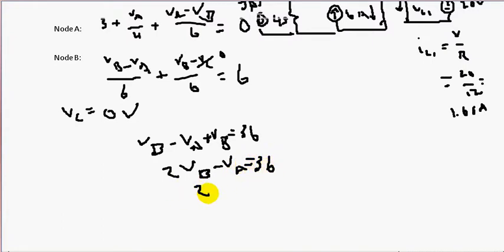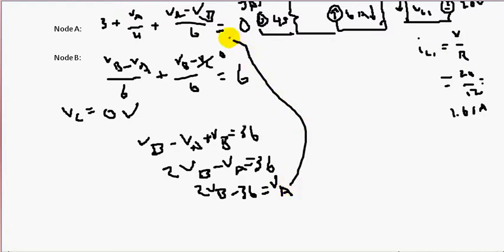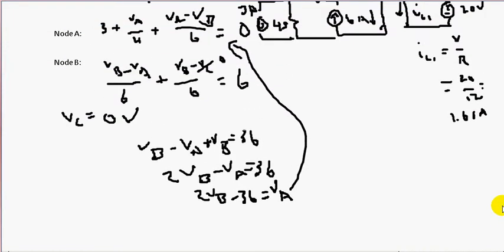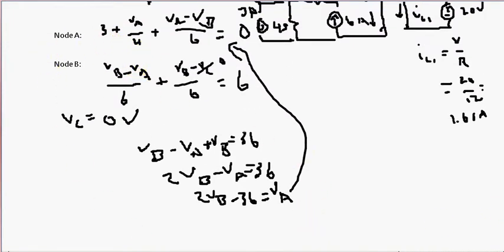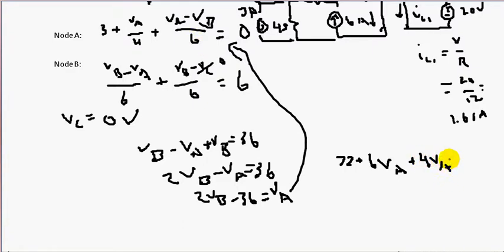Combining terms: 2VB minus VA equals 36, so VA equals 2VB minus 36. We'll substitute this into node A's equation. Multiplying node A's equation by 24 on both sides: 24 times 3 is 72, plus 6VA — since 24 divided by 4 is 6 — plus 4VA minus 4VB equals zero.